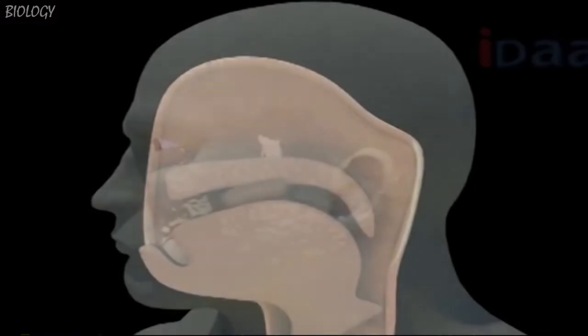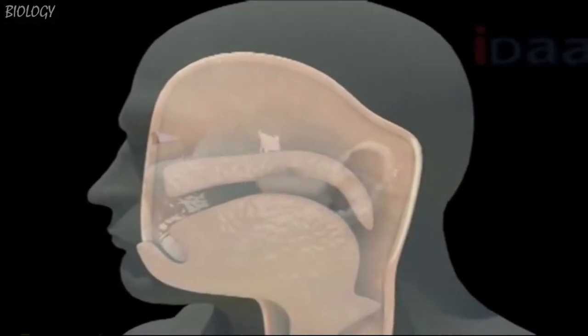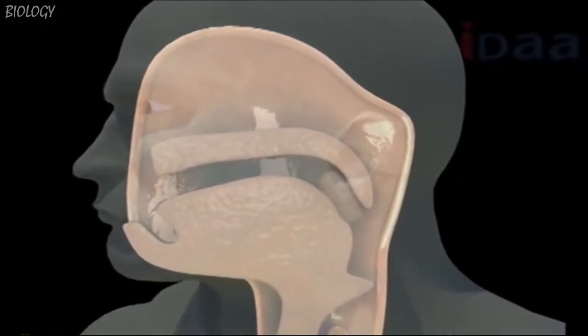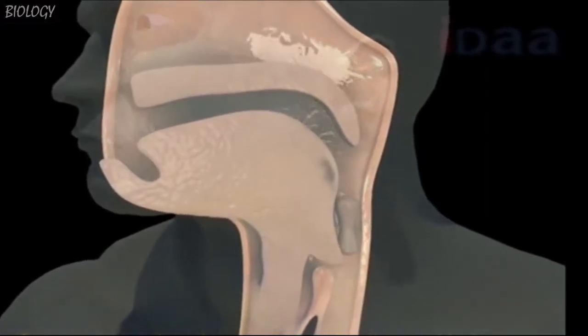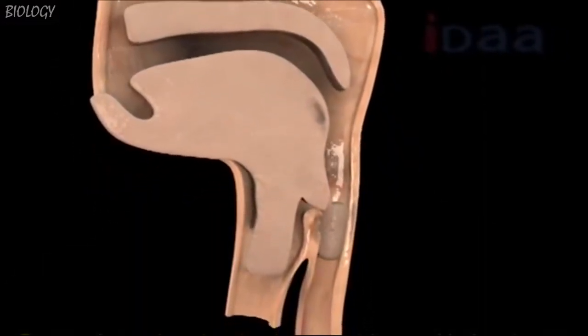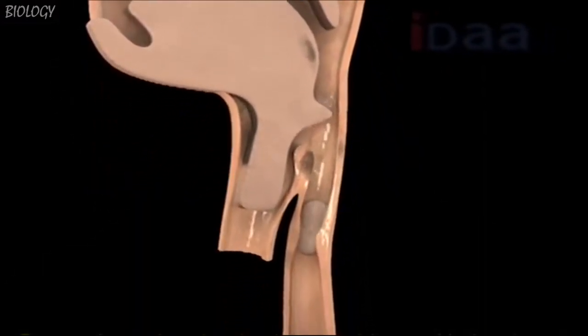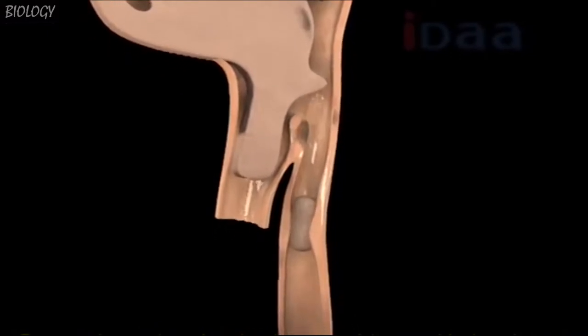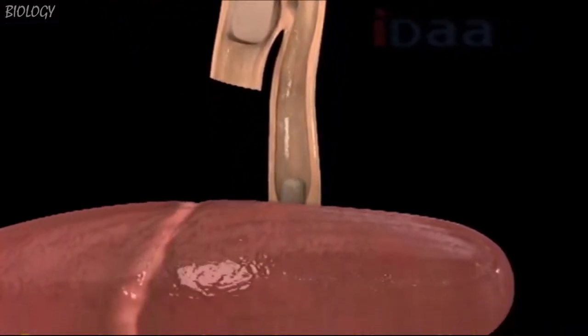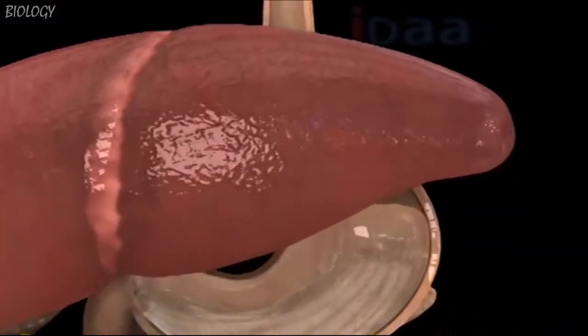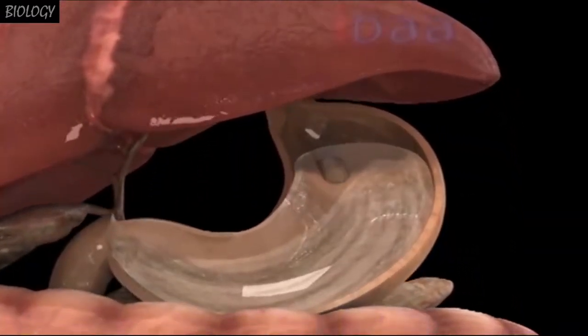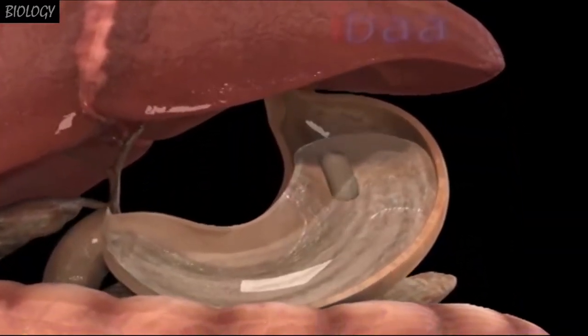Esophagus or Food Pipe. The swallowed food from the mouth passes onto the esophagus. The epiglottis, which is a flap-like structure behind the tongue, directs the food into the esophagus and prevents entry into the larynx. The peristaltic movements of the esophagus help the food move down the tract until it reaches the stomach.